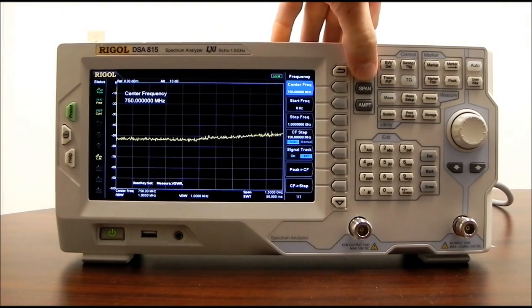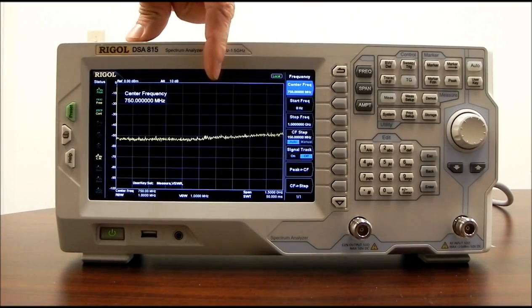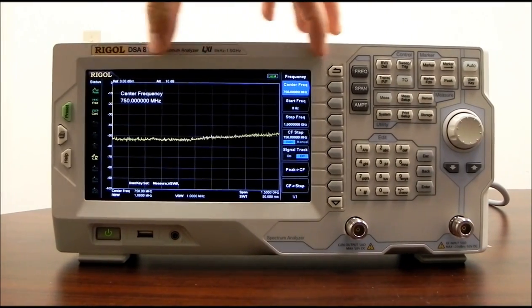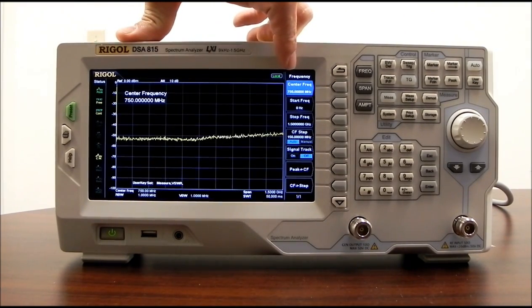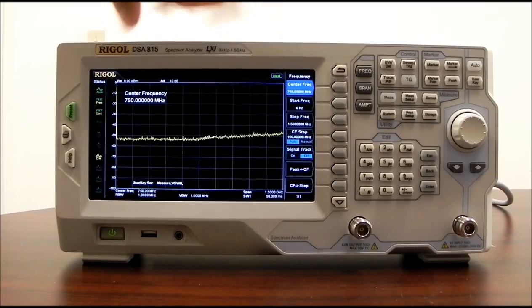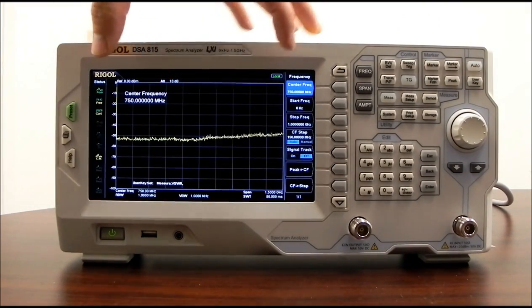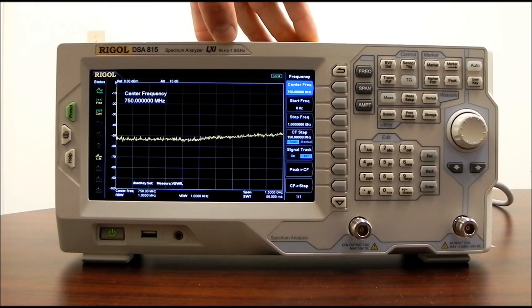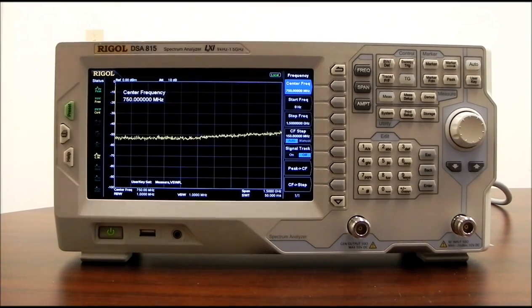Now we'll take a look at the frequency key, or frequency menu. We have center frequency, so we can select the center frequency value, and then it's going to adjust the span accordingly. So if we set our center frequency, in this case, is 750 MHz. Our start frequency is zero, so we're going from zero to stop frequency of one and a half gig. So we're doing a full span of the frequency ranges that are capable of being scanned on this particular instrument. This is a one and a half gig max. So we're going from 9 kHz to one and a half gig for each scan.